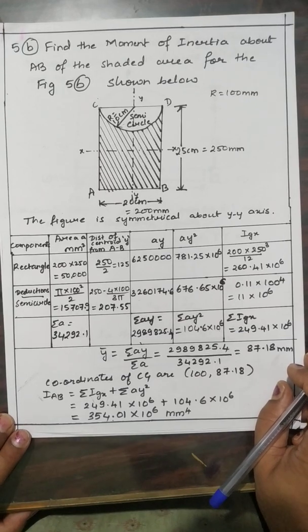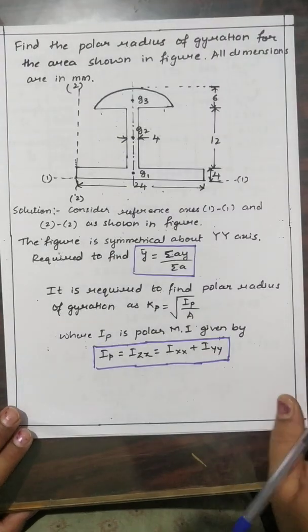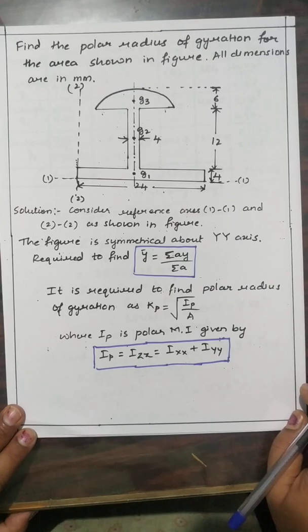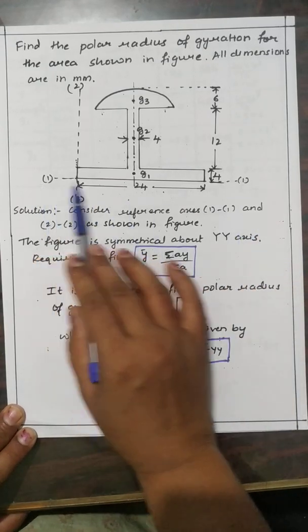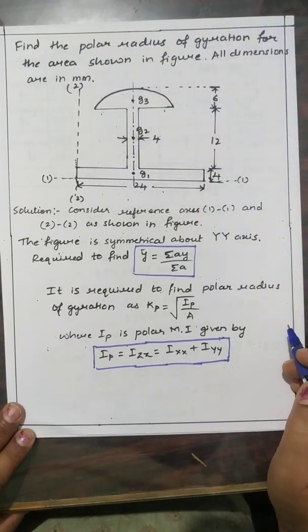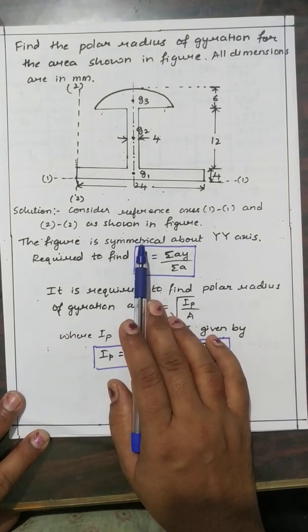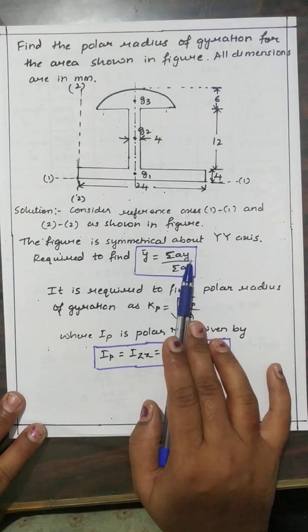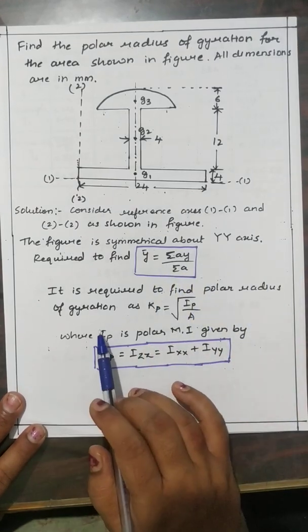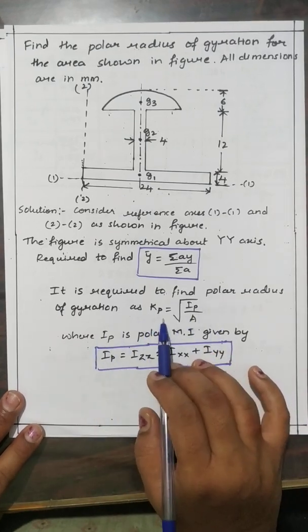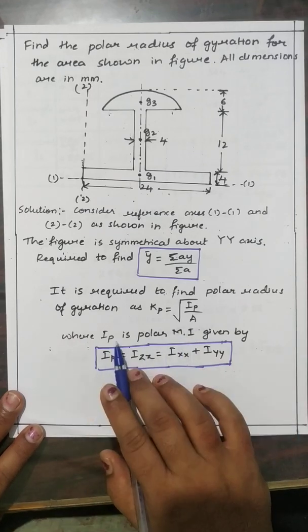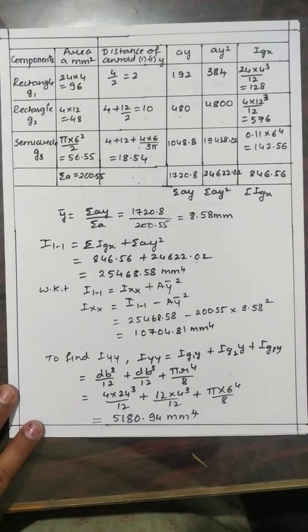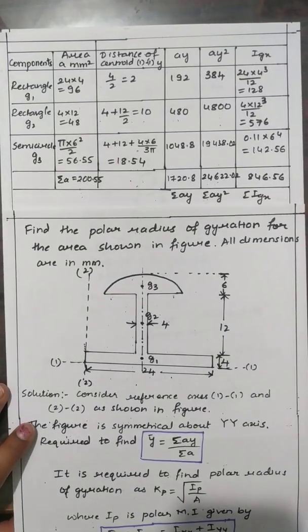If you have any doubts, please mention them in the comment section. Next is finding the polar radius of gyration for the area shown in the figure, where all dimensions are in mm. We consider reference axes 1-1 and 2-2 as shown. The figure is symmetrical about the Y-axis. First, find Y-bar = ΣAY / ΣA, then find the polar radius of gyration KP = √(IP / A), where IP = IZZ = IXX + IYY.